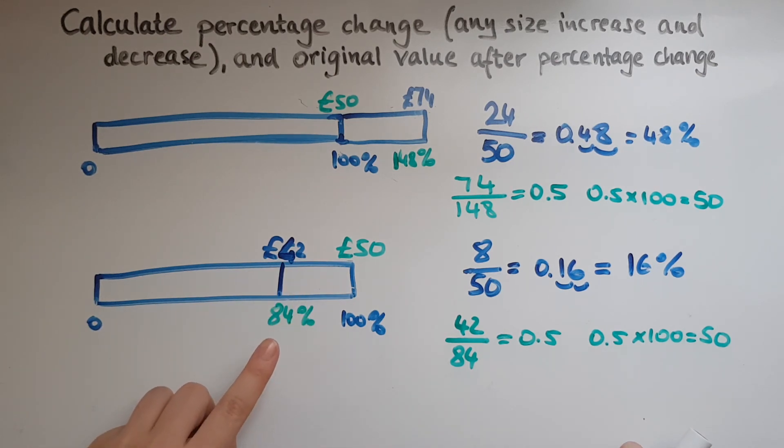We looked at what is the new price? How many percent does that represent? So divide it. So new price over the percentage that it represents. And that gave us how much 1% is. And then again, multiply it by 100 to give us the original or the 100% value.